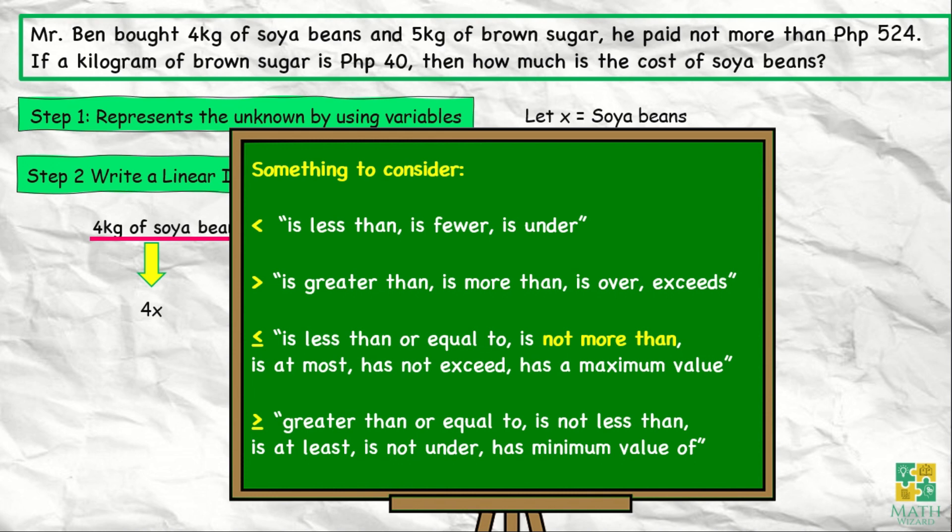Here are some keywords to consider when translating statements into a linear inequality. We have is less than, is fewer, is under. For greater than: is more than, is over, exceeds. Is less than or equal to includes is not more than, is at most, has not exceed, has a maximum value. Greater than or equal to includes is not less than, is at least, is not under, has minimum value of. These are the keywords to remember when translating word problems into mathematical statements or linear inequalities.